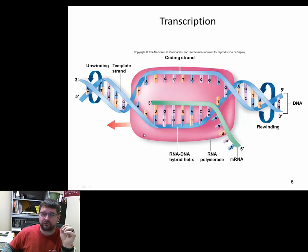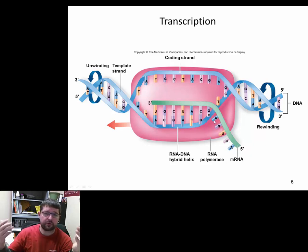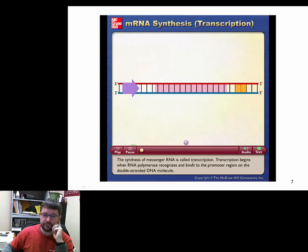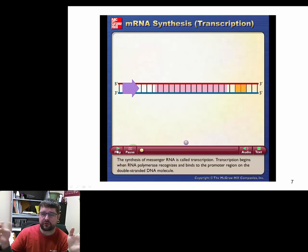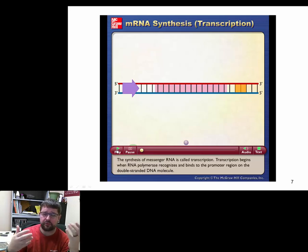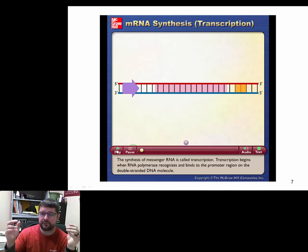The termination code causes the RNA polymerase to dissociate — it falls off — and your messenger RNA strand for that gene is made. It can then disassociate and go into solution. Transcription in eukaryotes and prokaryotes is a little different because eukaryotes have a nucleus and prokaryotes don't, but the premise behind the two is fairly similar.